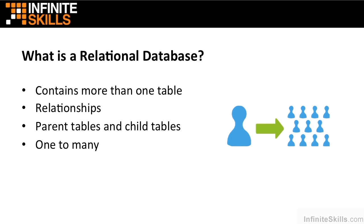When you have multiple tables that are related, some tables will be parent tables and some tables will be child tables, so their data will be dependent on another table, just as a child is dependent on a parent. And there will be lots, or maybe just a few, one-to-many relationships.